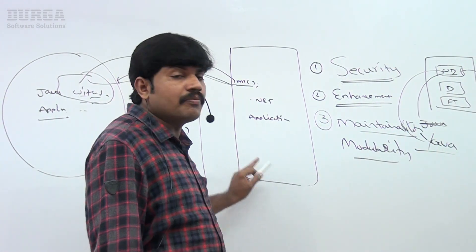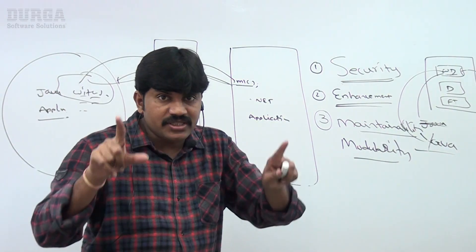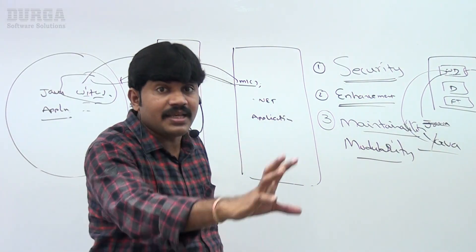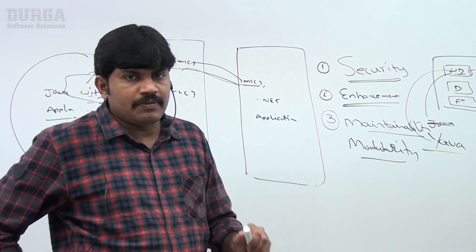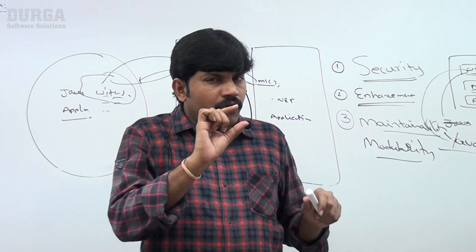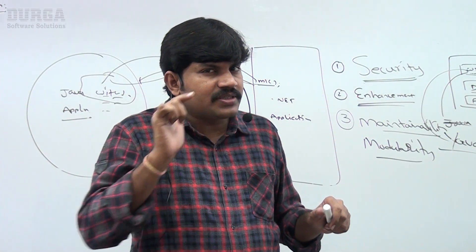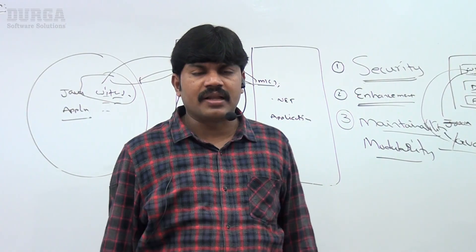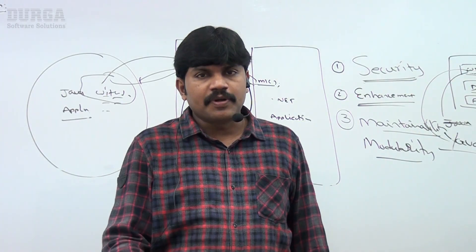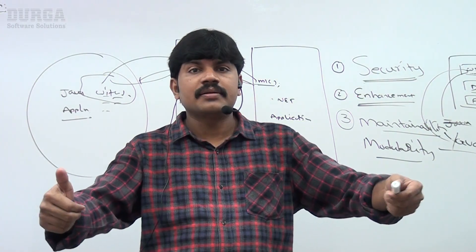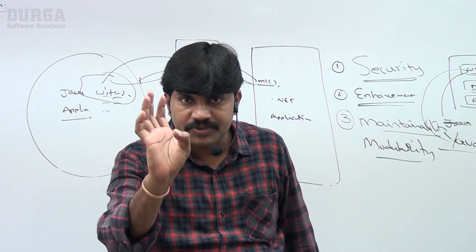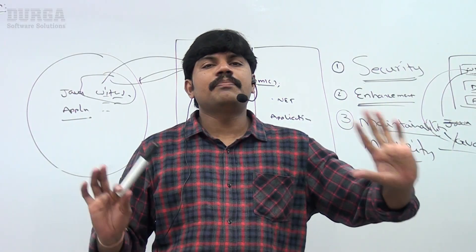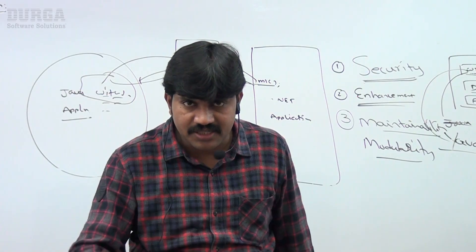So you get the basic idea: what is abstraction, what advantages it has, and how you can implement it — by using interface concepts, GUI screens, and APIs. If any person asks for the definition of abstraction in one line: hide internal implementation, just highlight the set of services. Security is the biggest advantage of abstraction.